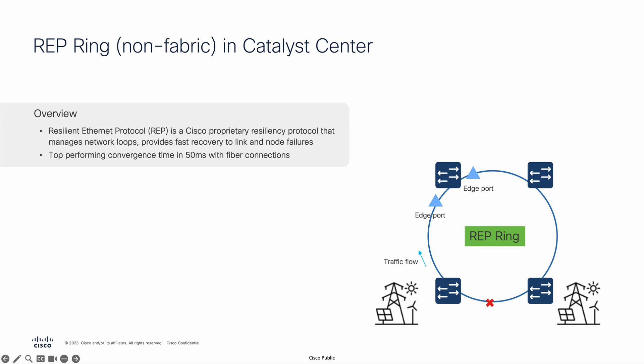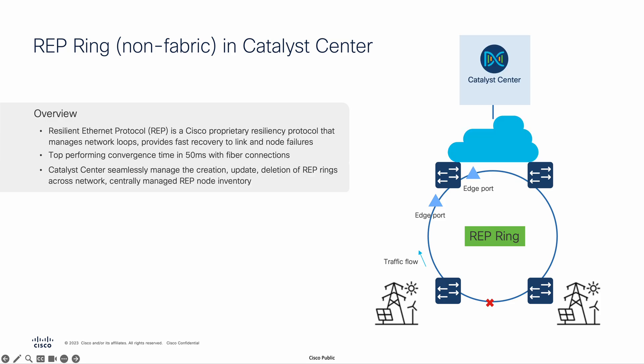WRAP ring could be run in conjunction with SDA fabric, so it could be deployed in SDA fabric mode or non-fabric mode. If we position WRAP topology in non-fabric mode with the Cisco IE switches, it could be seamlessly deployed and managed by the Cisco Catalyst Center to manage the creation, update, and deletion of WRAP rings across networks.